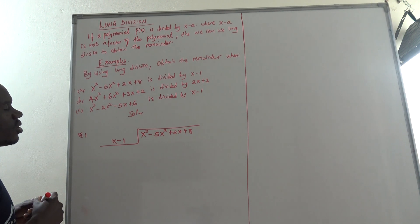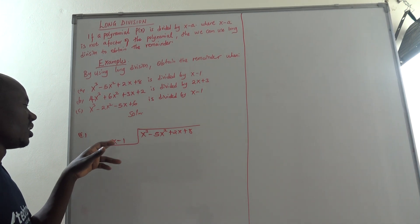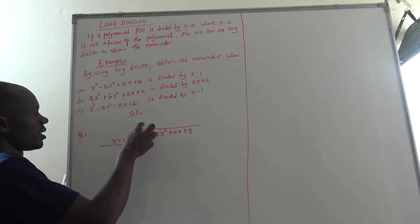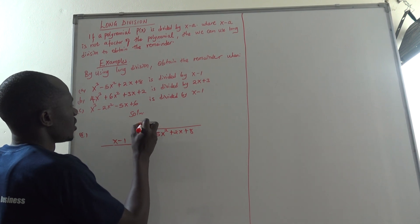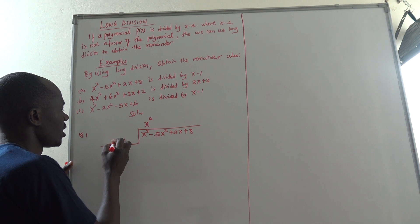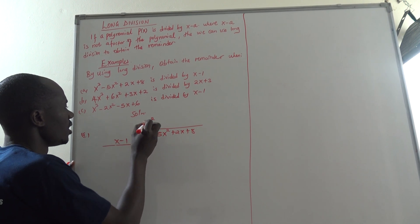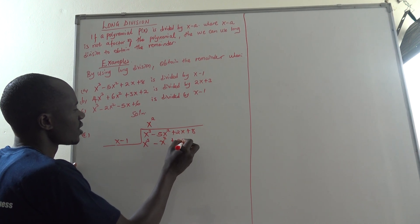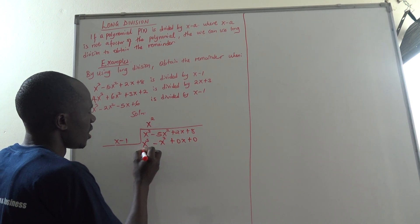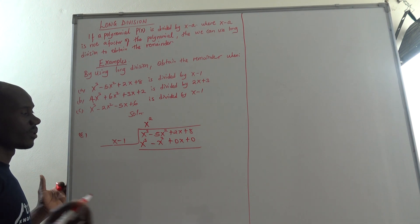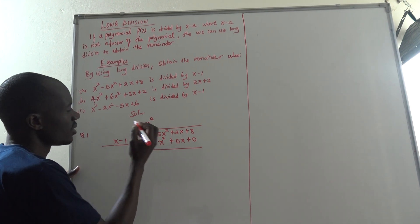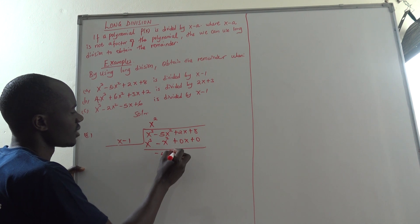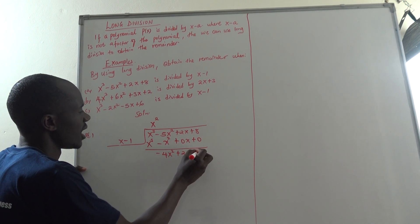Look at a variable — when I put it and multiply with x, I will get x cubed. That variable is x squared. x squared times x gives x cubed. x squared times 1 gives x squared. Then, since we don't have missing terms, we can say plus 0x plus 0. We deduct. x cubed minus x cubed gives 0. Negative 5x squared minus negative x squared gives negative 4x squared. Then we are left with 2x plus 8.